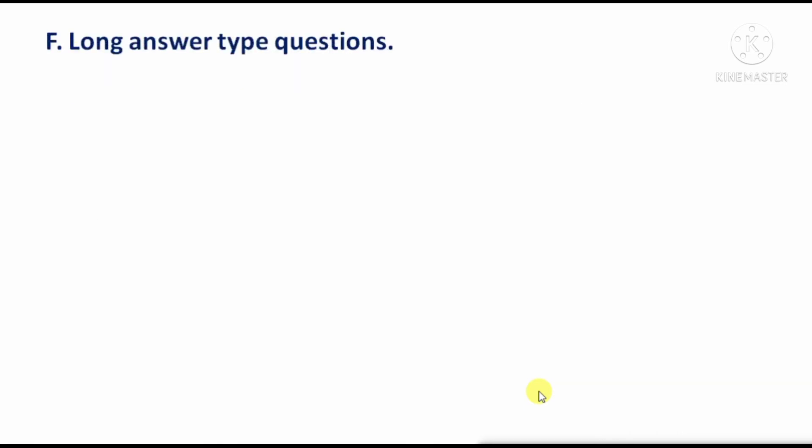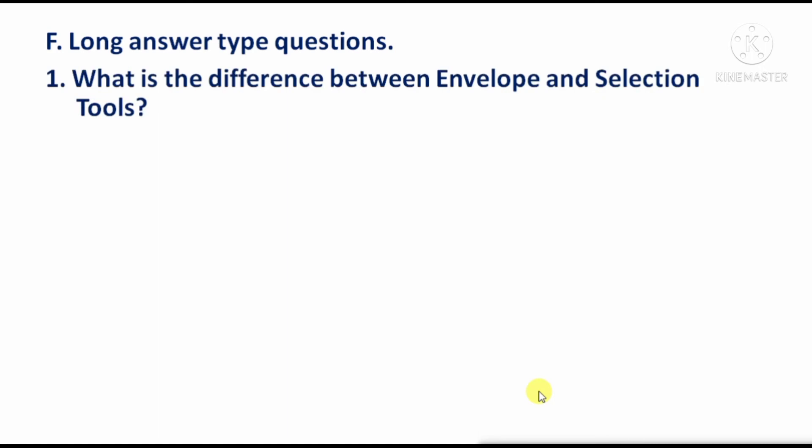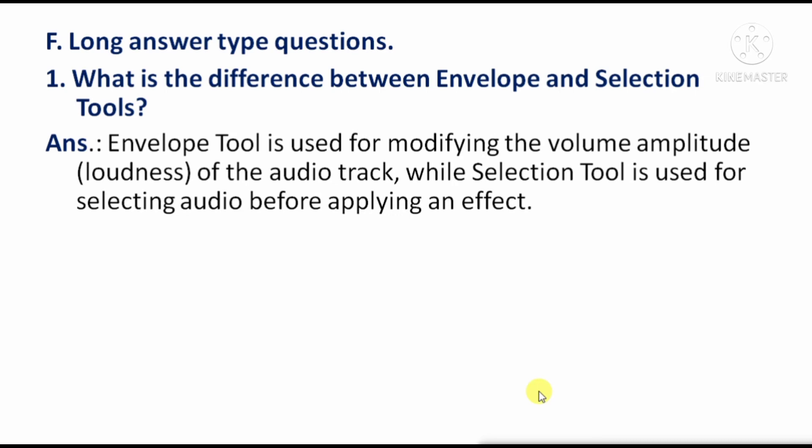Long answer type questions. Question 1 — What is the difference between Envelope tool and Selection tool? Envelope tool is used for modifying the volume amplitude, i.e., the loudness of an audio. While the Selection tool is used for selecting audio before applying an effect.